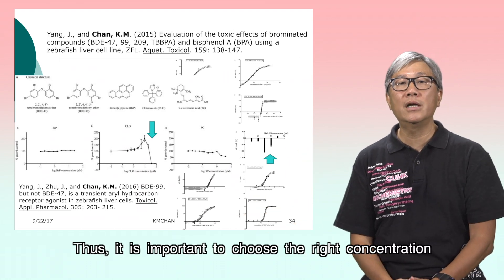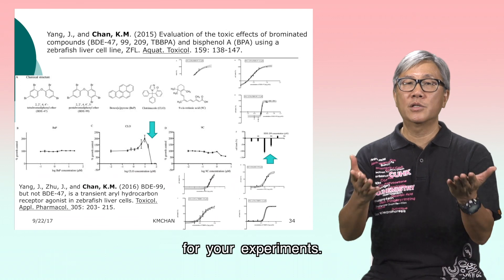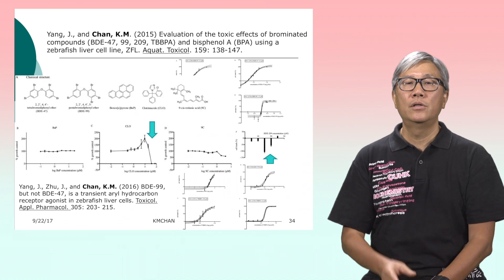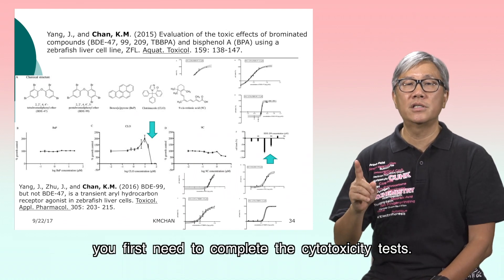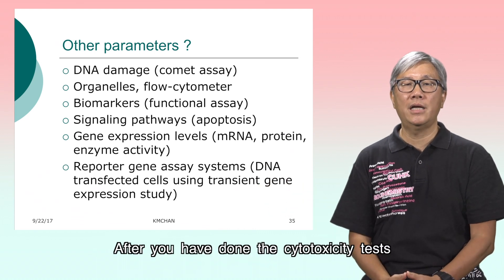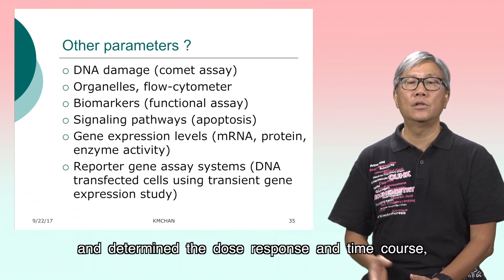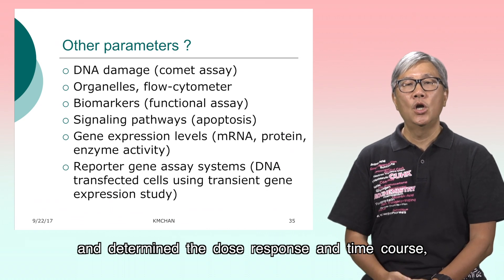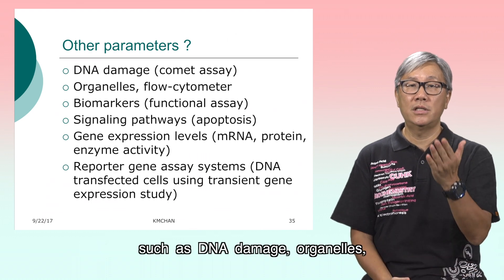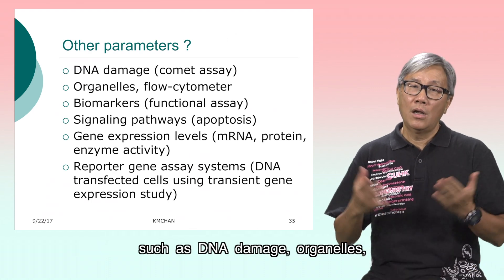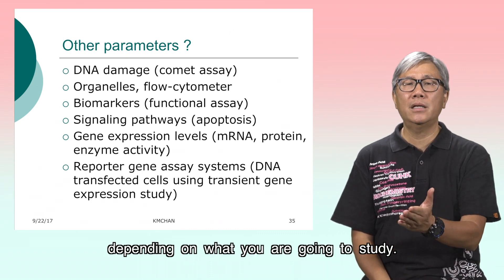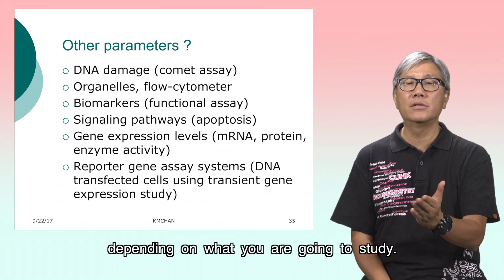It is important to choose the right concentration for your experiments. Before you conduct your experiments, you first need to complete the cytotoxicity test. After you have determined the dose response and time course, you may need to select other parameters to study, such as DNA damage, organelles, biomarkers, or cellular pathways, depending on what you are going to study.